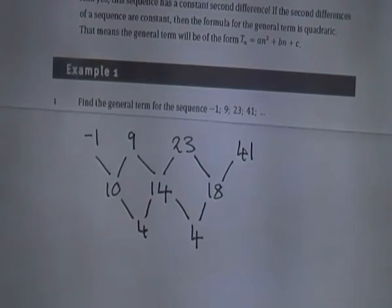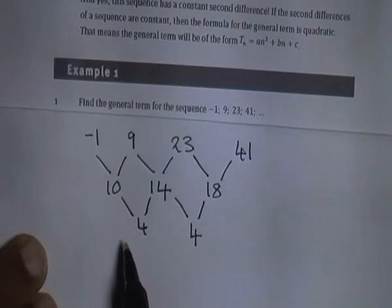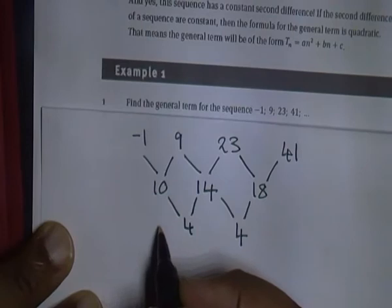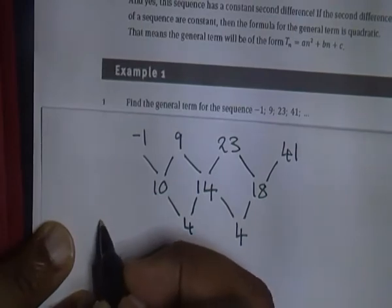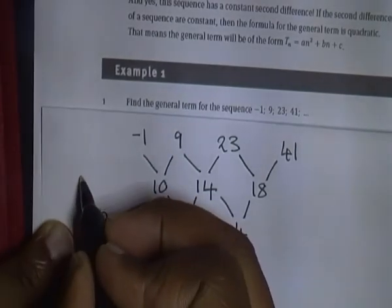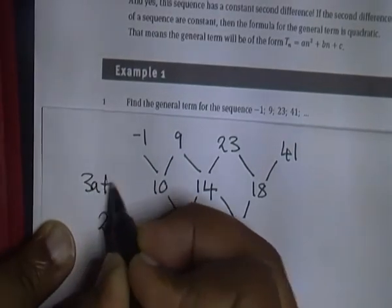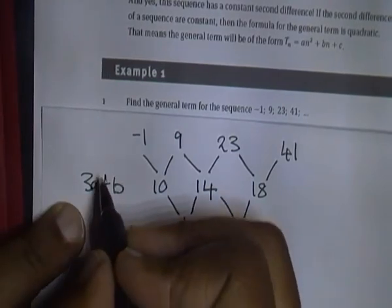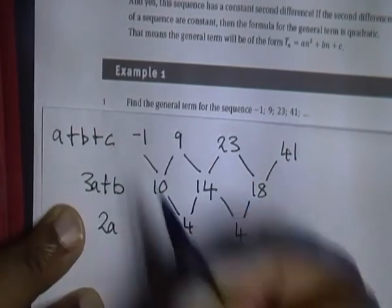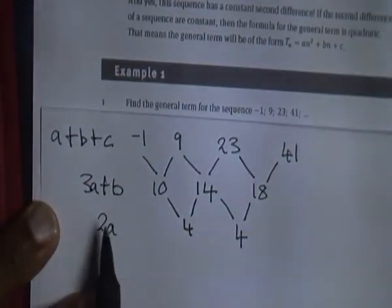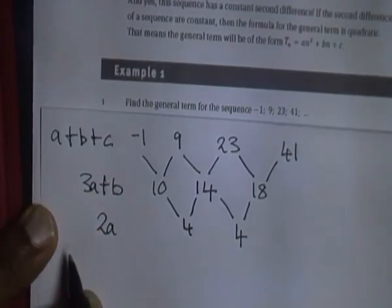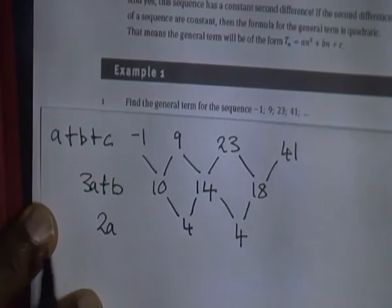When you are looking for the second common difference, you need to remember the following formula. The second difference is equal to 2A. The first difference is equal to 3A plus B. And the first term is A plus B plus C. You need to remember this formula. Very important. Unfortunately, they will not give this to you in the exam, so you must know it.